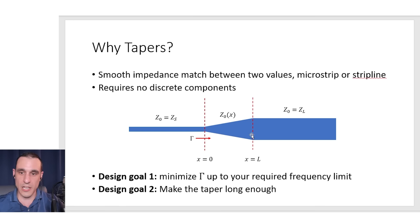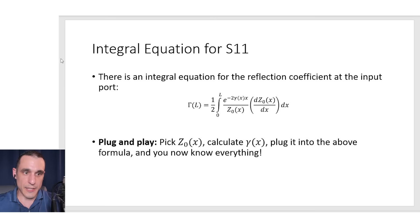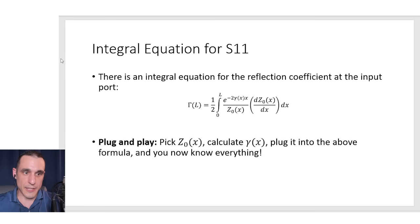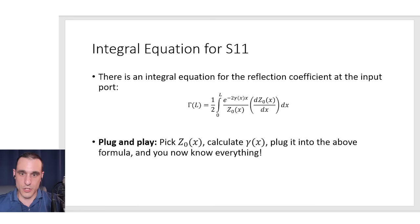We need to make the taper long enough but not too long, so there's a little bit of optimization there. Mathematically, we have this Z₀(x) function — the impedance profile looking along the taper. We can use that impedance profile in an integral equation to get the S11 or the return loss looking at the input port. S11 is just the reflection coefficient, and there is an integral equation that defines the reflection coefficient at this input port.